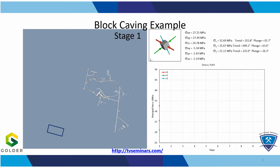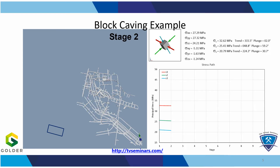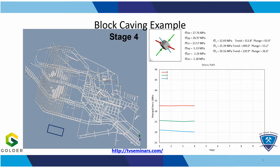Another example where you might want to capture the stress path is a block caving example. I'm showing here the level where you're going to develop the extraction level for a block cave, and the rectangle highlighted in blue is where some infrastructure is going to happen. You want to capture the full stress path that happens in that particular location for a refined model. Pay attention to the stress block at the top and how it changes and rotates as the cave advances, and on the graph you will see the magnitude of the stresses changes as the block cave advances.